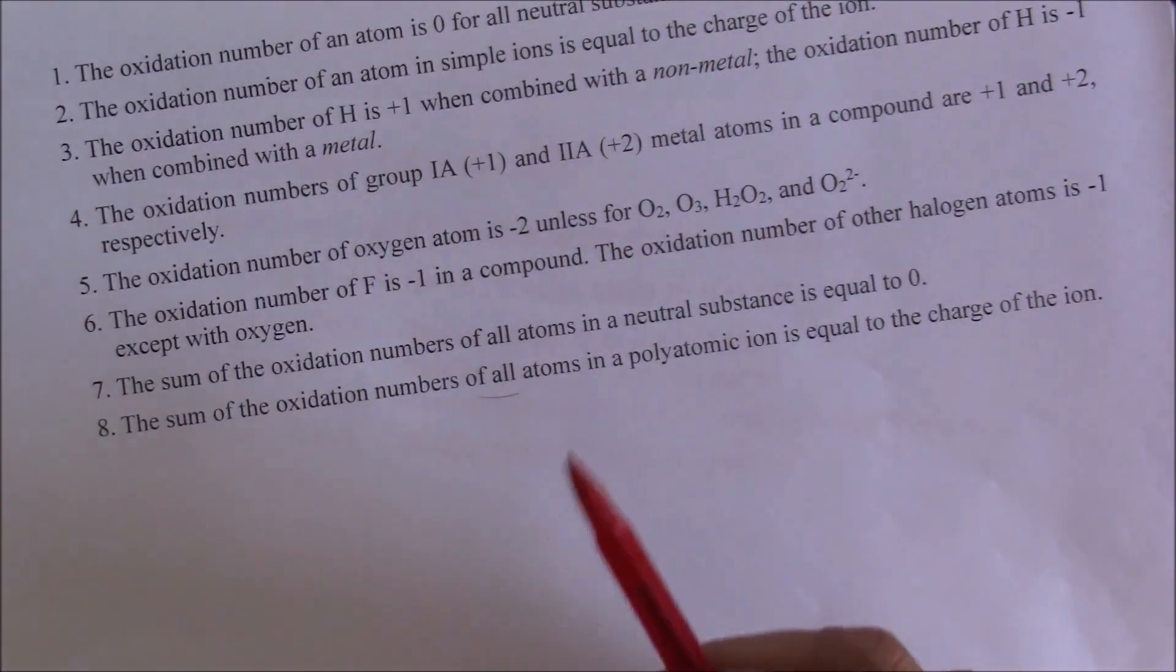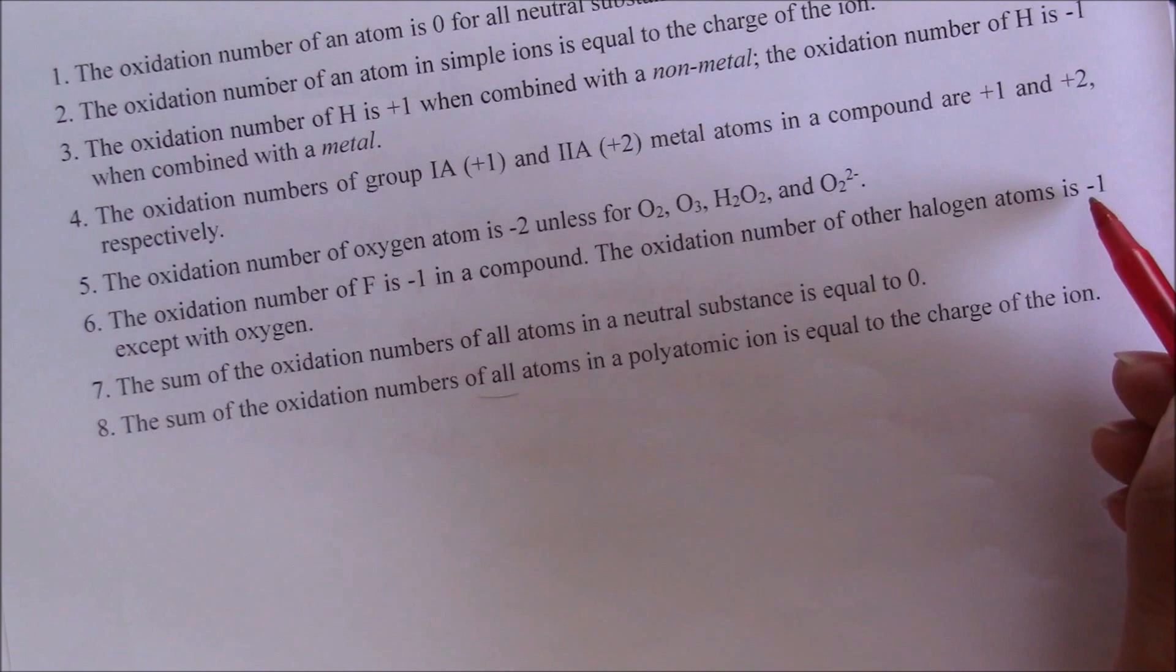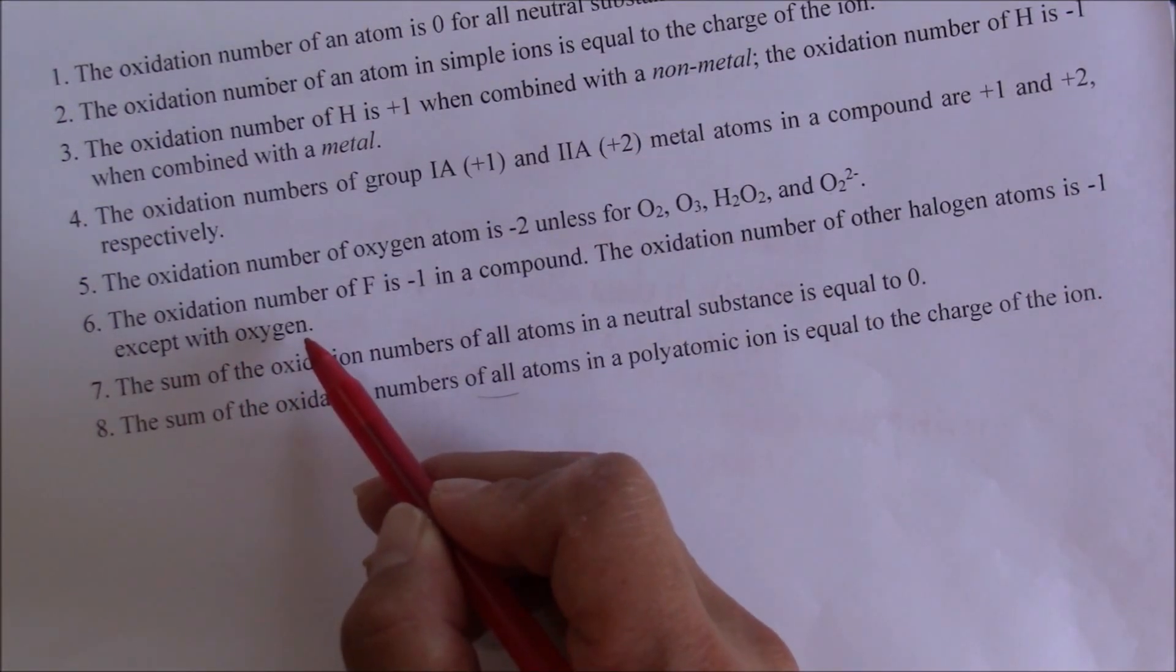Now let's look at rule number 6 again. The oxidation number of other halogen atoms is negative 1 except with oxygen. I should make a correction.